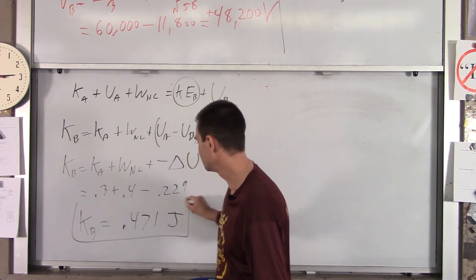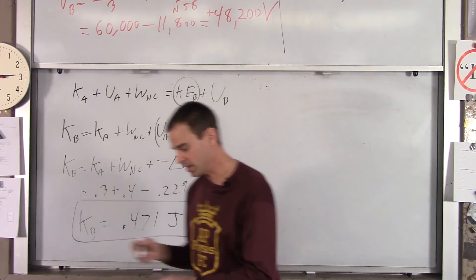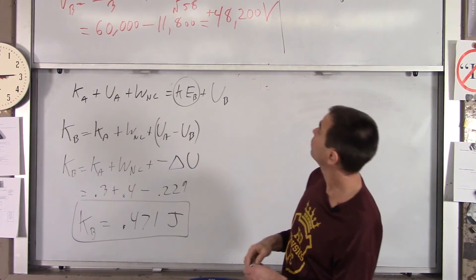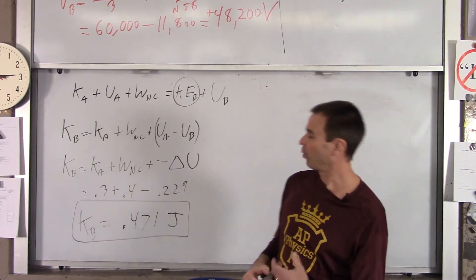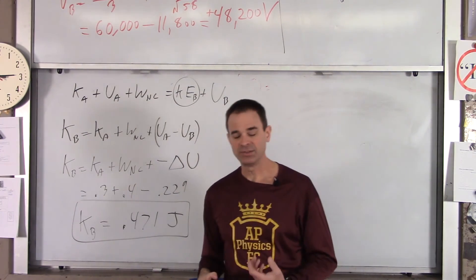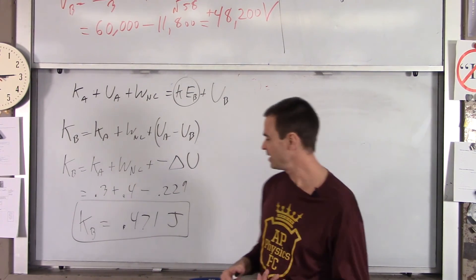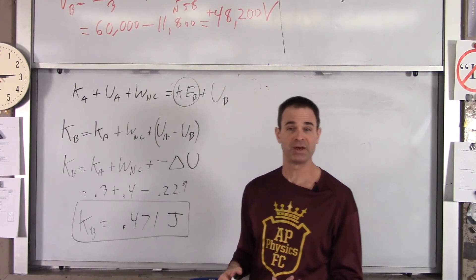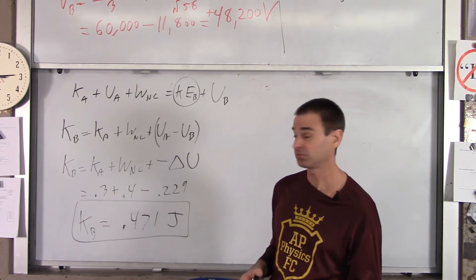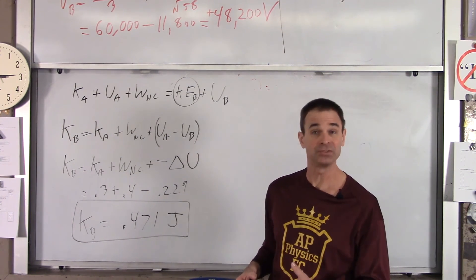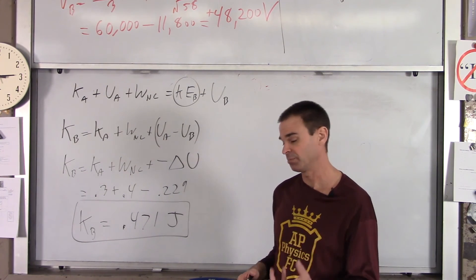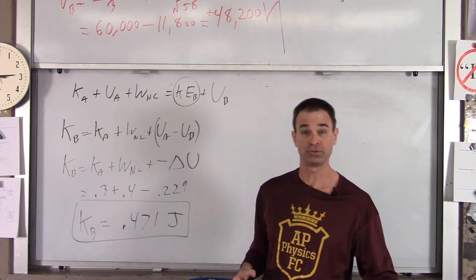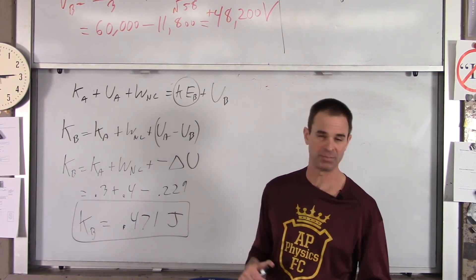His kinetic energy at A was 0.3 joules and at B it's 0.471 joules, so he has sped up — he's going faster at B than he was at A. That's because we gave him a push on the way from A to B.